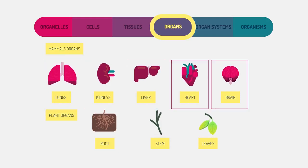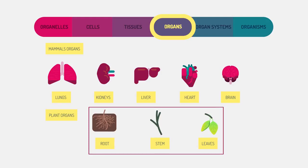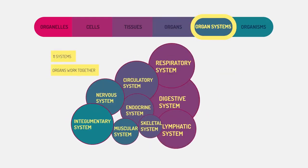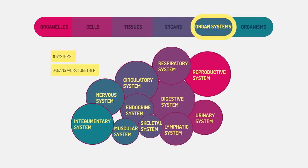But plants have organs too. These specialized organs work together in organ systems, performing body functions.